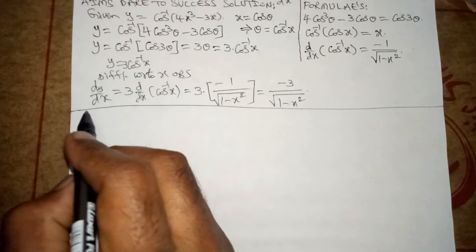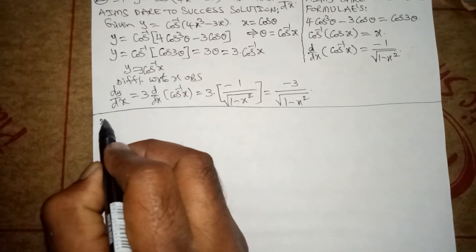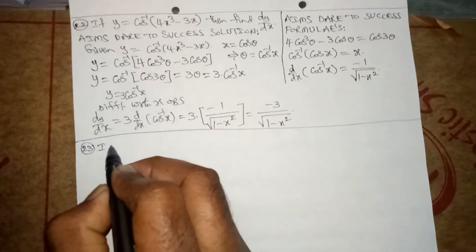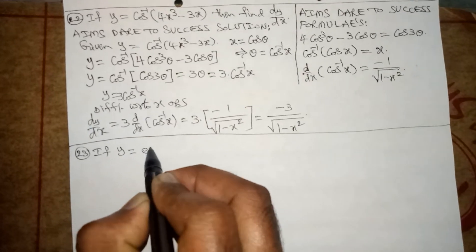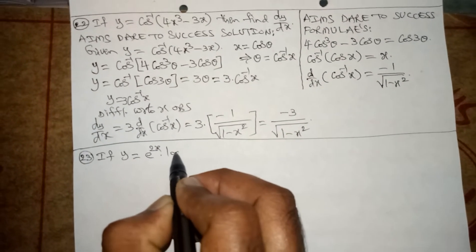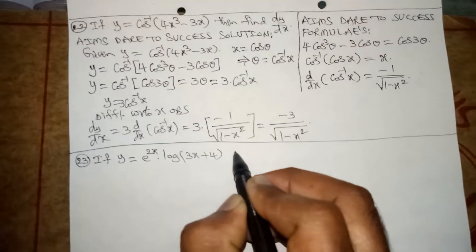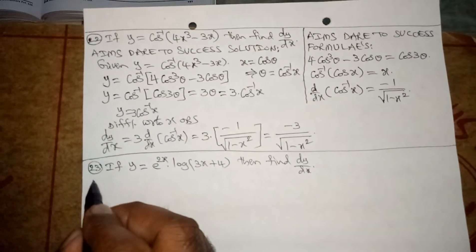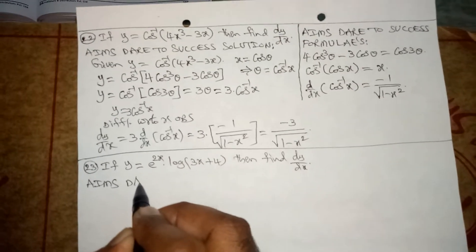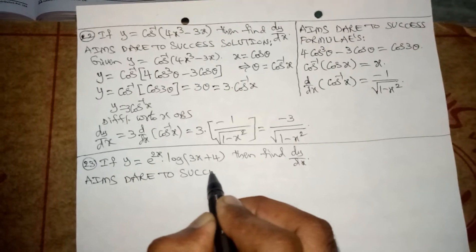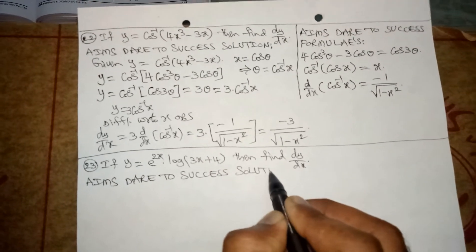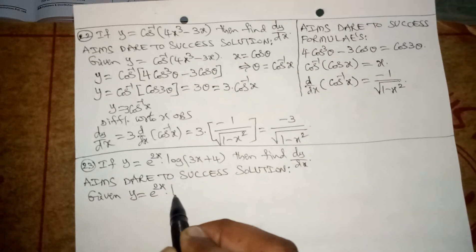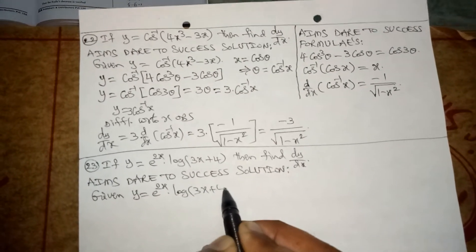Hi my dear friends, namaste. Today we are discussing Maths 1B differentiation. The question is: if y is equal to e power 2x into log(3x + 4), then find dy/dx. Aims Dare to Success. Given value is y = e^(2x) · log(3x + 4).